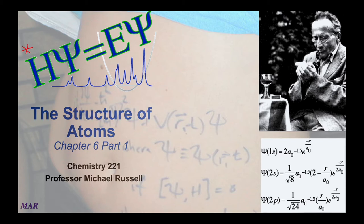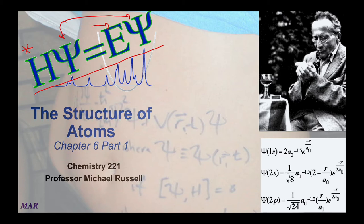When it comes right down to it, basically everything in this section comes from the equation at the top: H psi equals E psi. H is called a type of a function and it works on a wave function, psi. When you do this math procedure, you get the same function back, but most importantly you get the energy. Knowing the energy of electrons is super important to chemists. Down in the lower right I have some examples of what those psi functions look like.